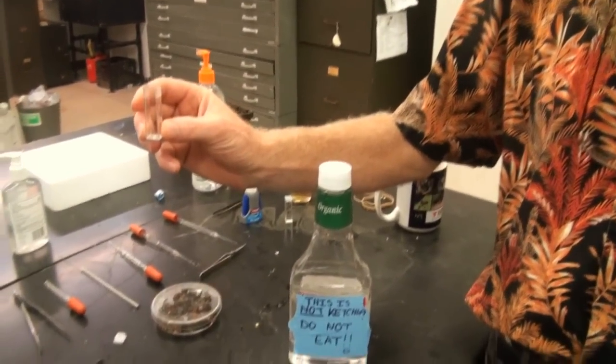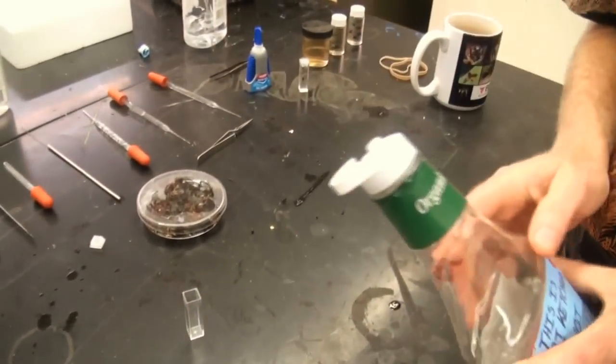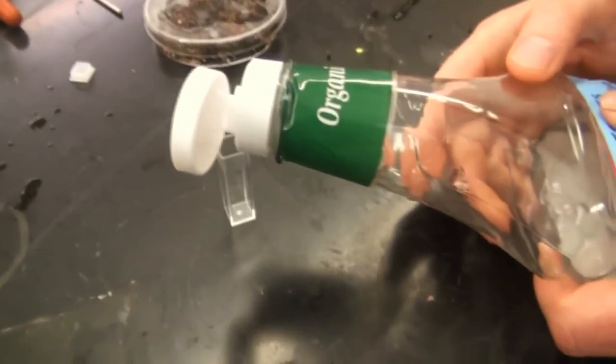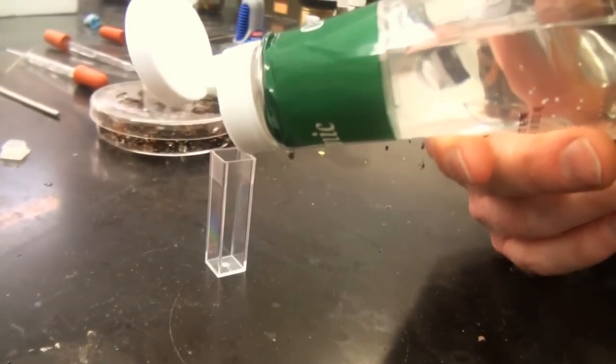Okay, so we have a little cuvette here. It's empty. We're going to take our ketchup bottle with hand sanitizer in it and we are going to pour, and I realize I should have my reading glasses on but I don't, some hand sanitizer in there about halfway up.